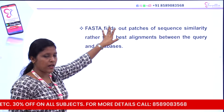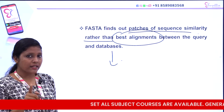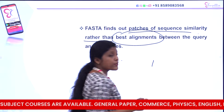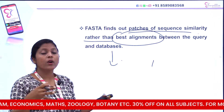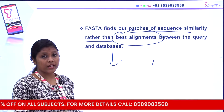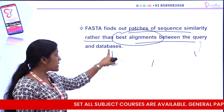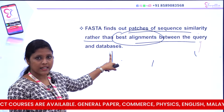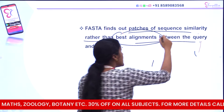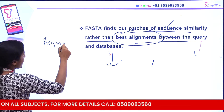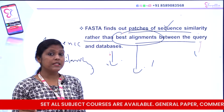Now let's look at the FASTA function. This FASTA function finds patches of sequence similarity rather than the best alignment between the query and the database. We already have a tool. If we need to use the best alignment, all of this needs information. We are looking at the database. FASTA is called sequence similarity. Best alignment is also called sequence similarity.